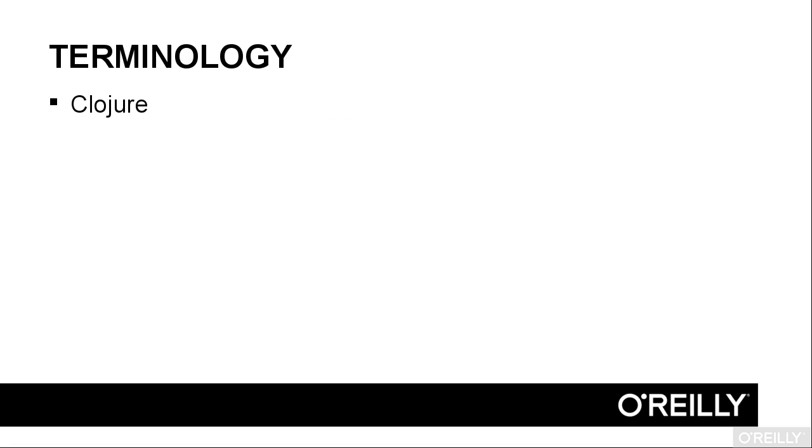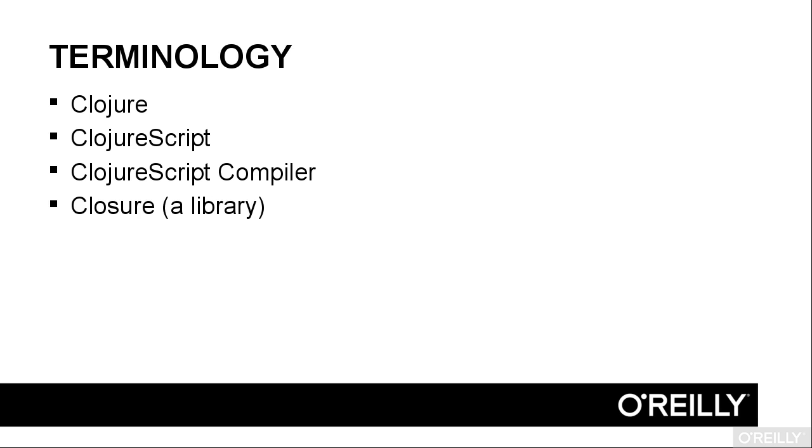So let's recap those terms. Clojure is the dialect of Lisp that runs on the Java virtual machine. ClojureScript is a subset of Clojure. The ClojureScript compiler is a program that translates your ClojureScript source code to JavaScript. It uses many features of Closure, a library from Google that has many utilities and user interface features. And Closure is also a compiler that optimizes JavaScript, keeping only the code that is needed for your application.